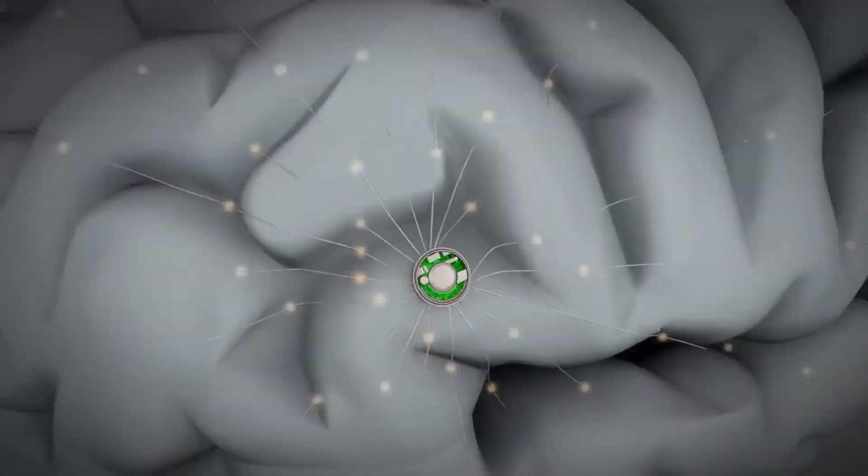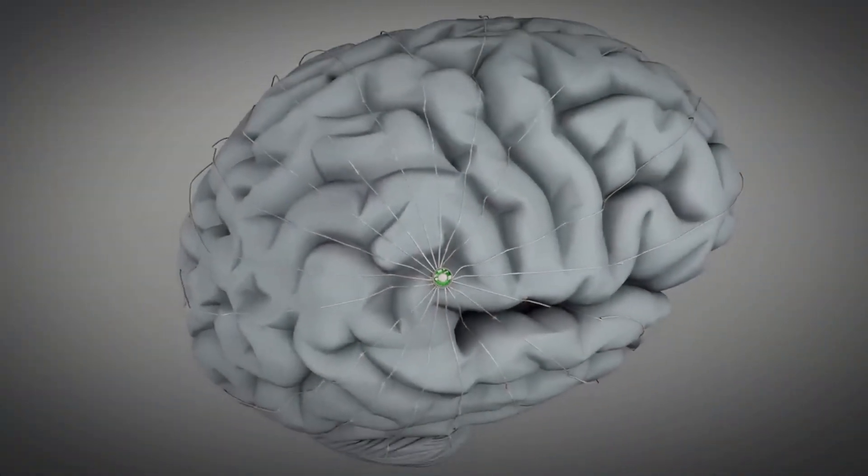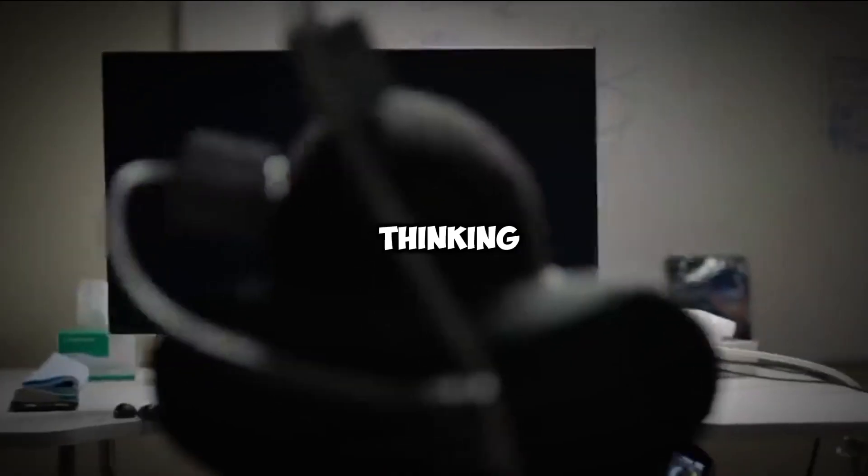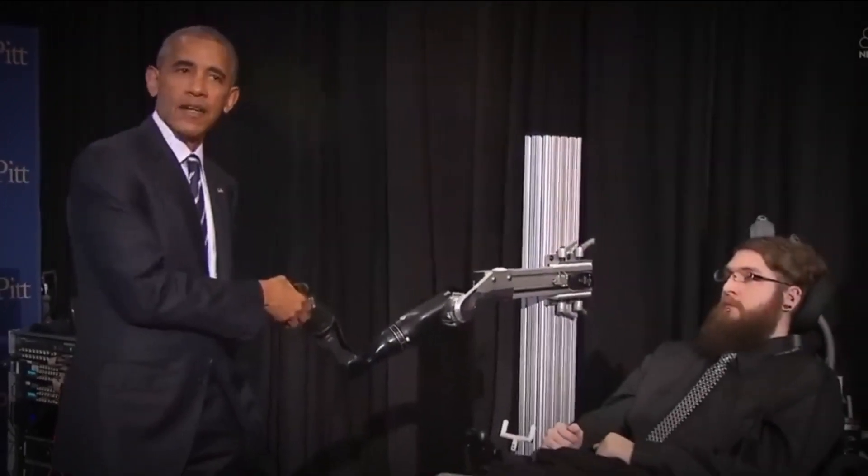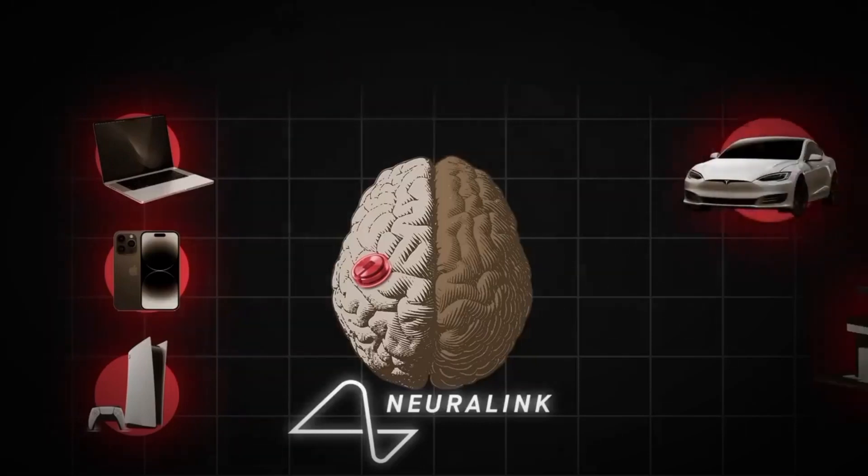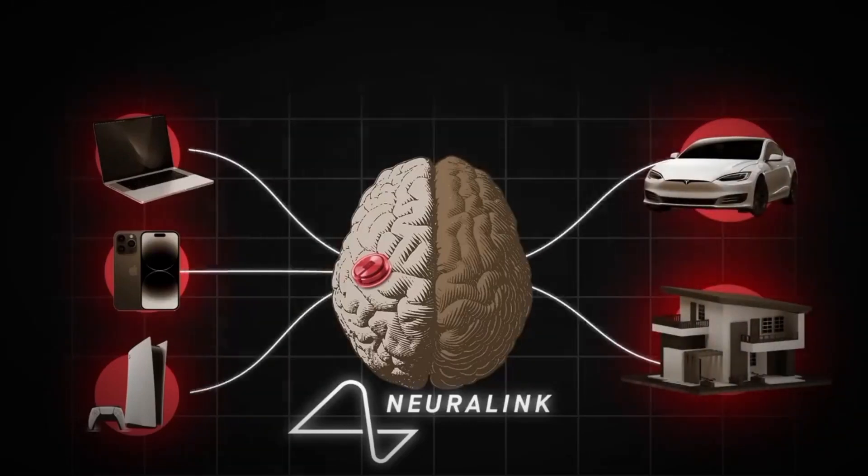Elon Musk has created a coin-sized brain chip that can make wheelchairs, phones and computers move by just thinking at them. The chip reads brain signals about hand motions and sends them to devices via Bluetooth, making them respond by just imagining moves. Awesome, right? These mind-controlled gadgets could set paralyzed patients free.